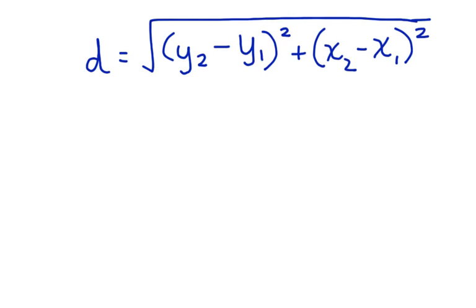The distance formula is equal to the square root of (y2 minus y1) squared plus (x2 minus x1) squared. Now you may be wondering what the x2 and y2's mean. Those are the ordered pairs of the endpoints.